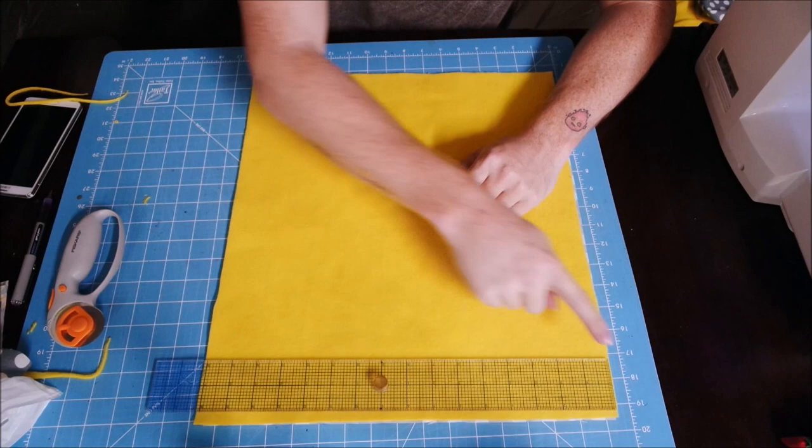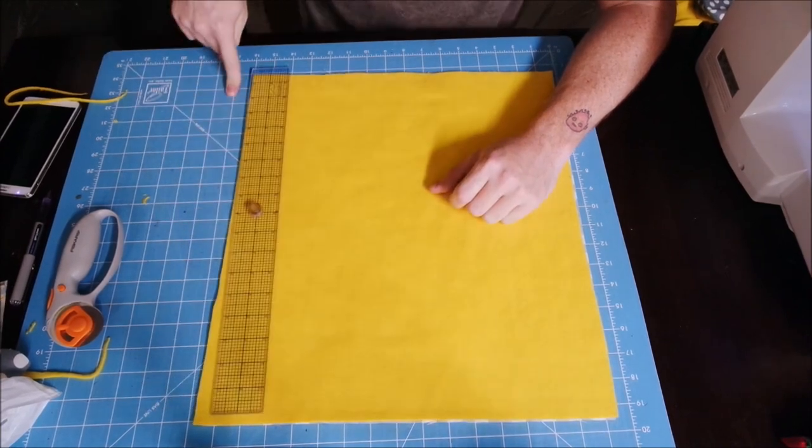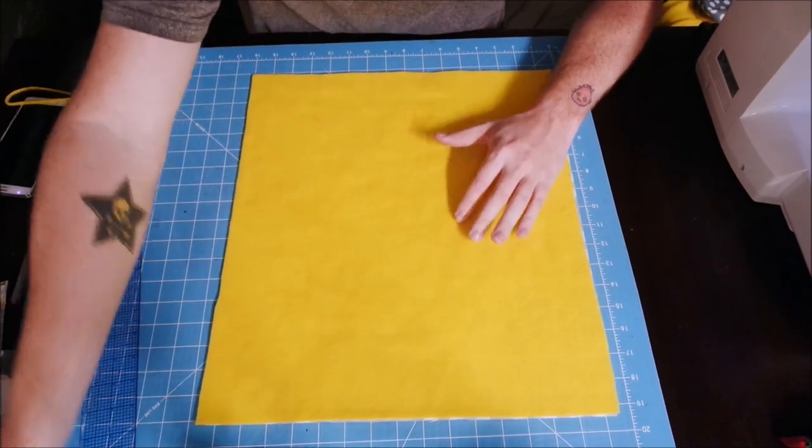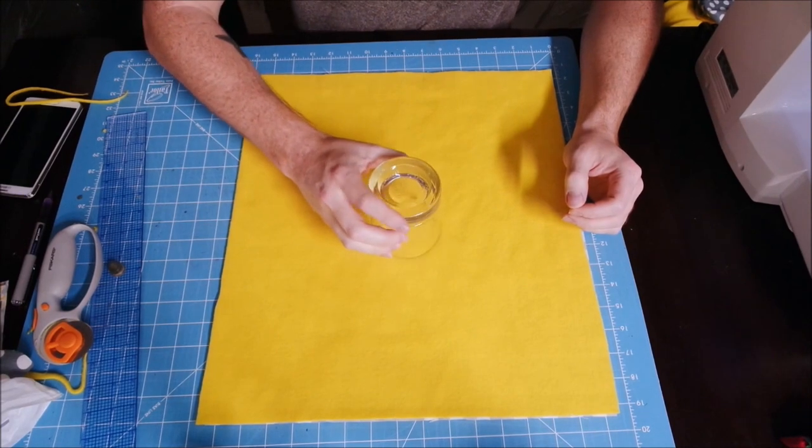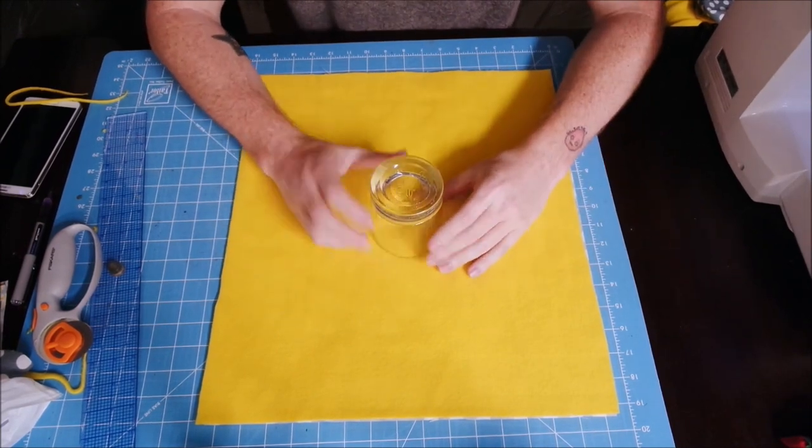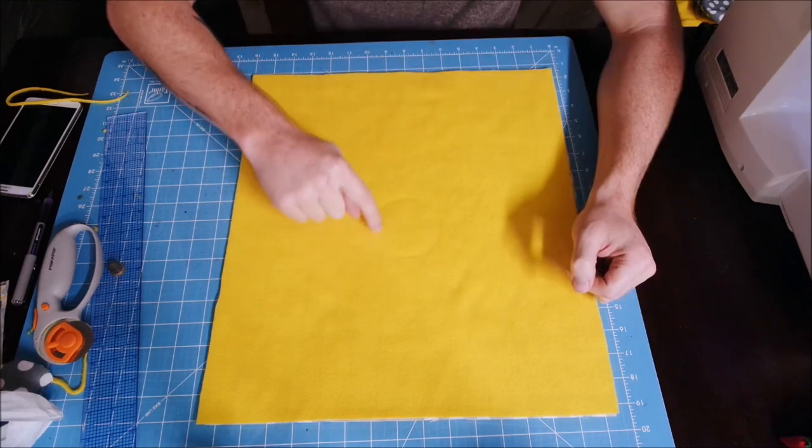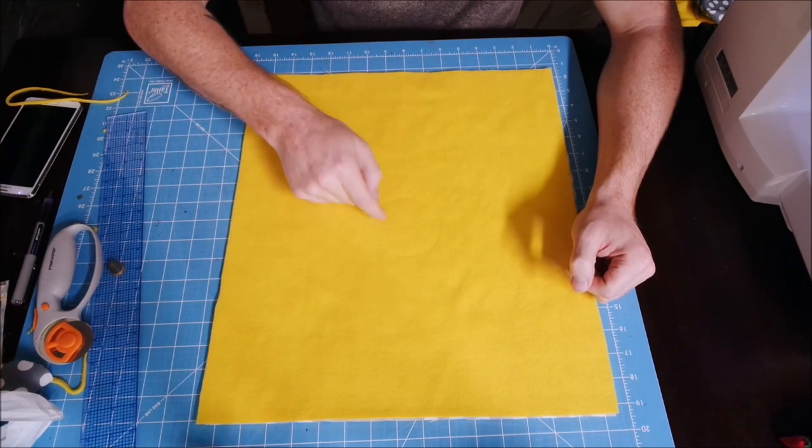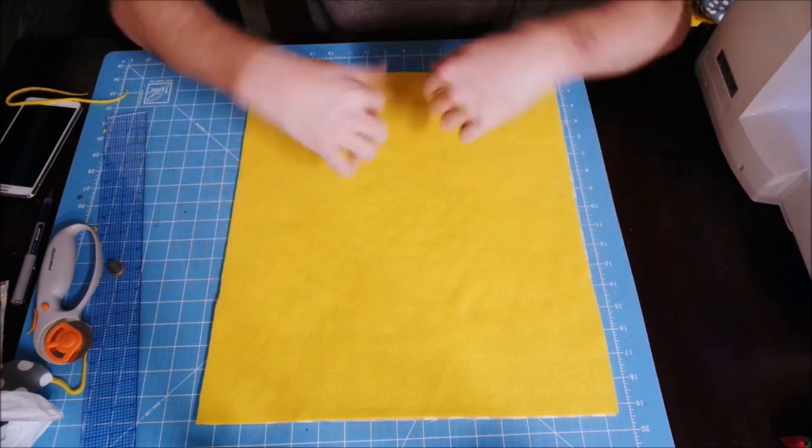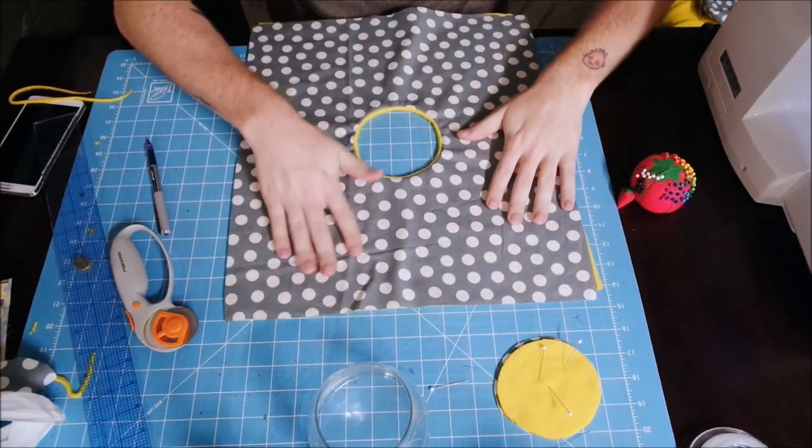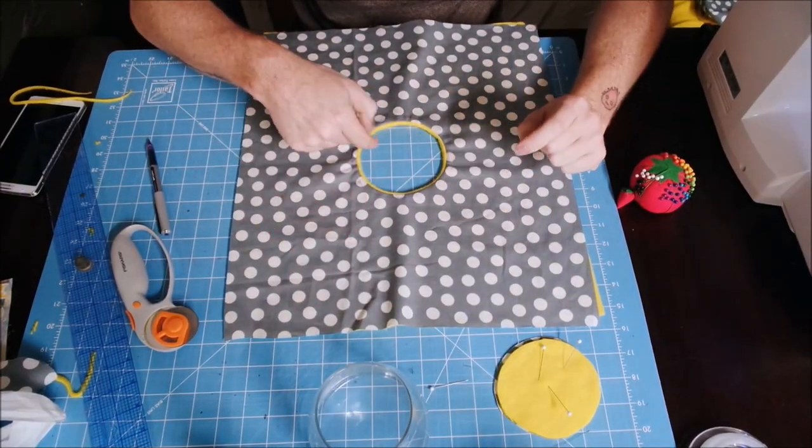So you're going to do a piece that is 16 by 18, and then you are going to take whatever you want for the opening and trace around it, and you're just going to sew around it, cut a slice or use your rotary knife and remove the circle, and then turn it inside out.